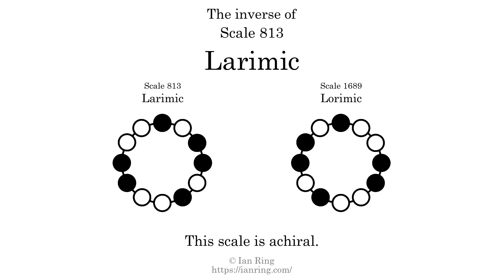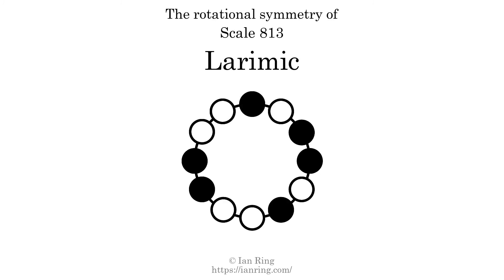The inverse of a scale is a mirror image — it is what you get when the sequence of intervals is reversed. The inverse of this scale is scale 1689, also known as Lorimic. This scale is achiral, since it can transform into its own reflection by a rotational transformation. This scale has no rotational symmetry.